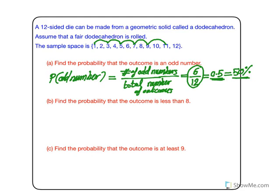What's important is that you get the right number. For the second one, we want to find the probability that the outcome is less than 8. Less than 8 means any number strictly less than 8, so 8 is not included.